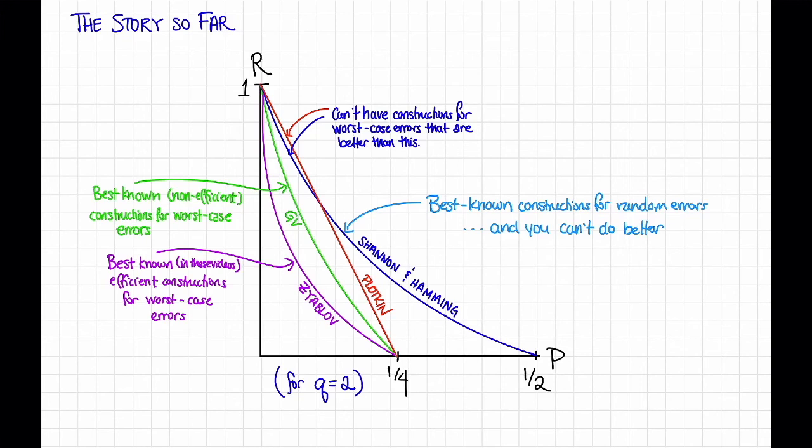The result that we just showed, or that we just sketched at least, says that exactly the same bound holds for random errors. That is, we cannot have constructions for random errors that are any better than this. However, unlike the worst case errors situation, this is also achievable. Shannon's theorem also says that there are constructions, perhaps non-efficient ones, that can meet this bound.